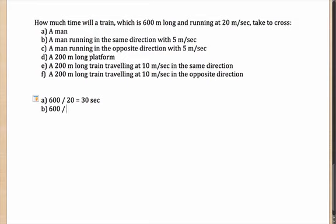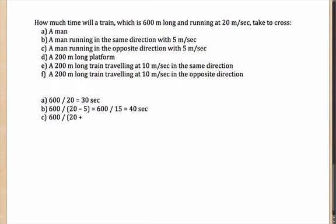What if the man was running in the same direction at 5 m/s? The distance that needs to be covered is still 600 meters — the length of the train — but the speed will now be the relative speed: 20 minus 5, because they are running in the same direction. So the answer will be 600 divided by 15, which is 40 seconds.